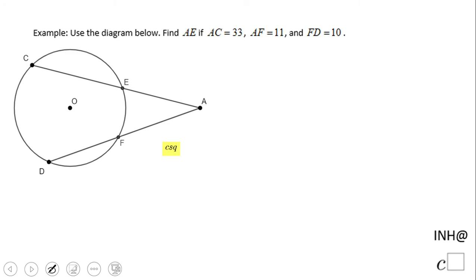Welcome or welcome back to NHC squared. In this example we need to find AE, this segment. We know AC is 33, which is the whole segment, which is a secant, and AF is this piece, and FD is this piece. So how are we going to do that?